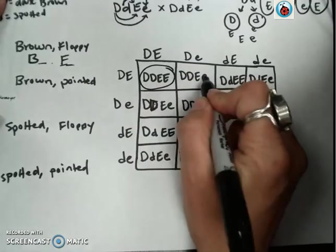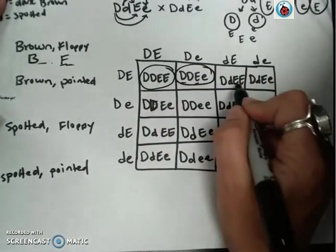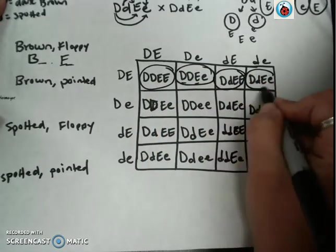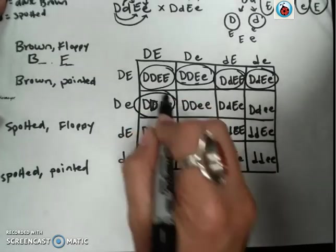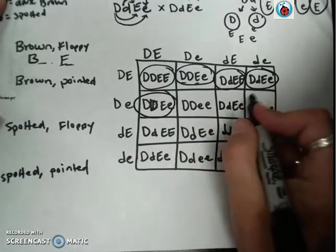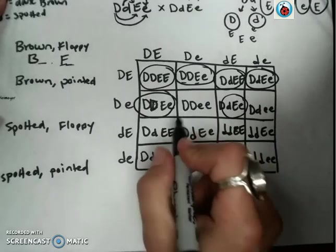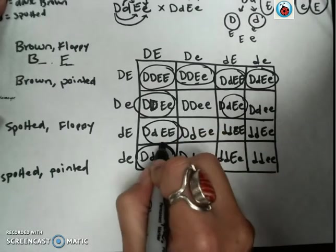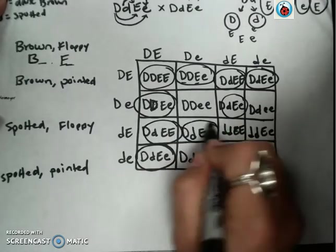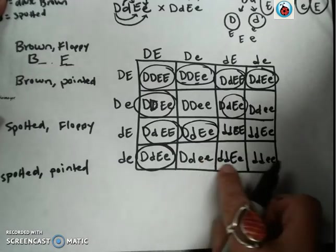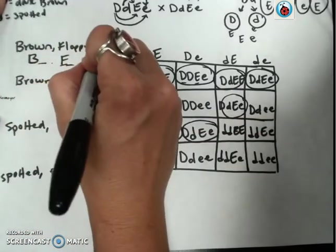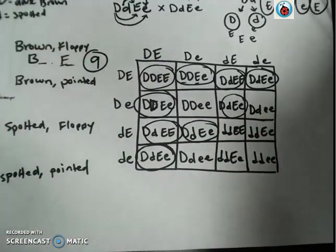So now here we have one, two, three, four, five, this one doesn't, six, seven, eight, nine. So as I look through, I find that I have nine offspring that are dominant for both traits.